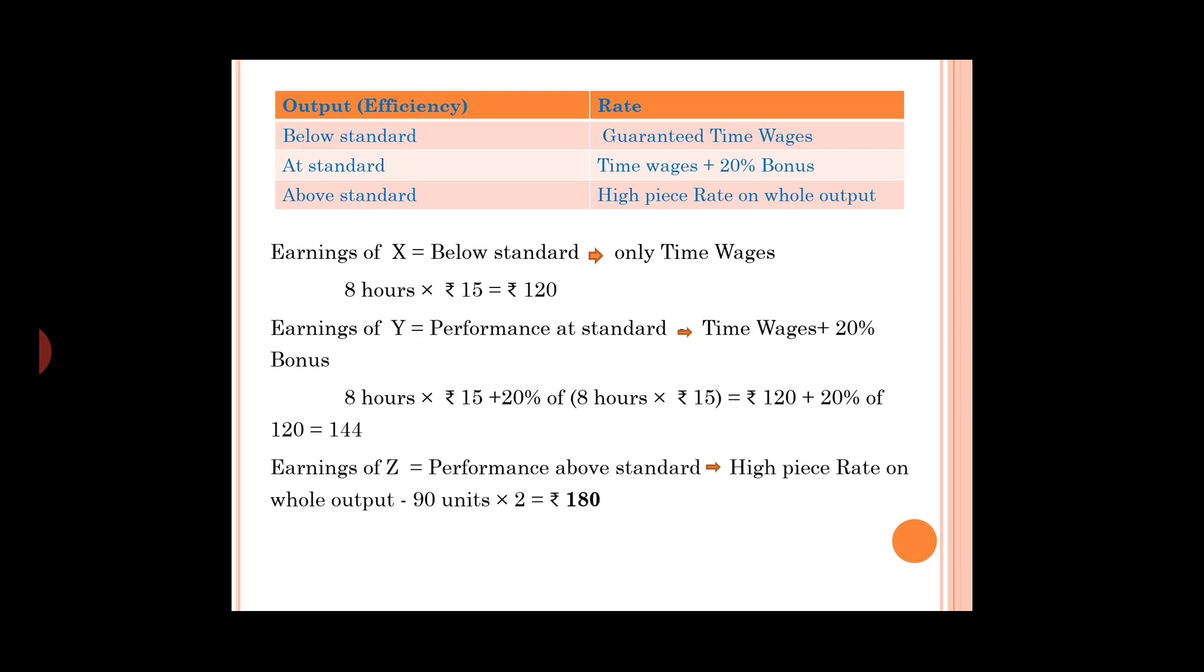Earnings of Z: performance above standard, high pace rate, so 90 units into pace rate 2 rupees equals 180. Okay, thank you.